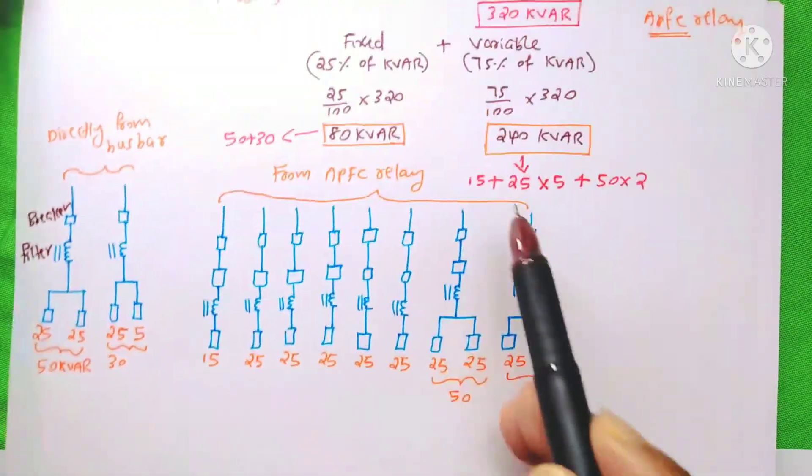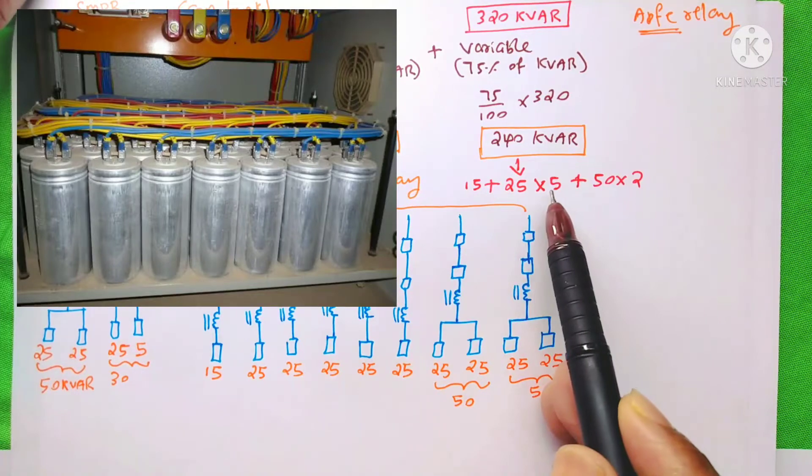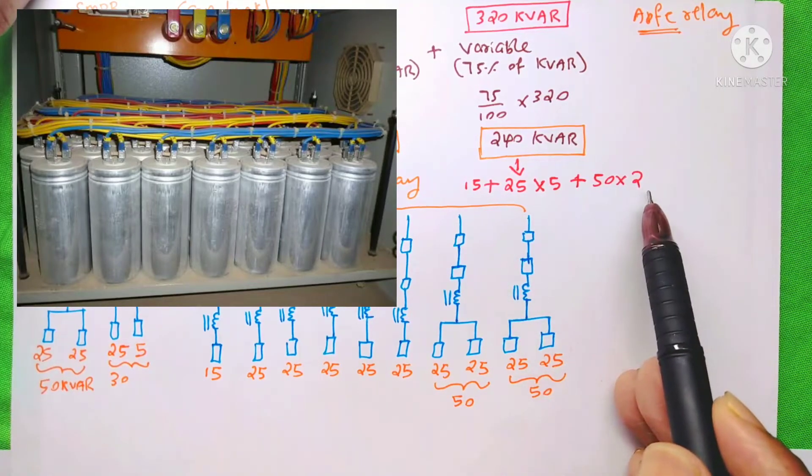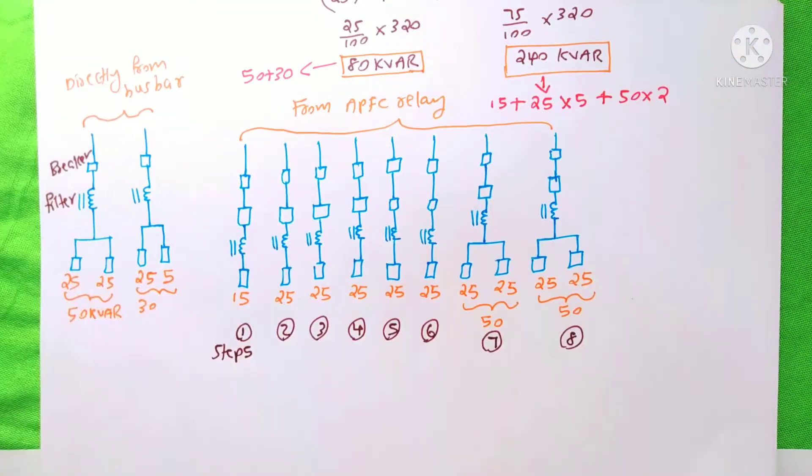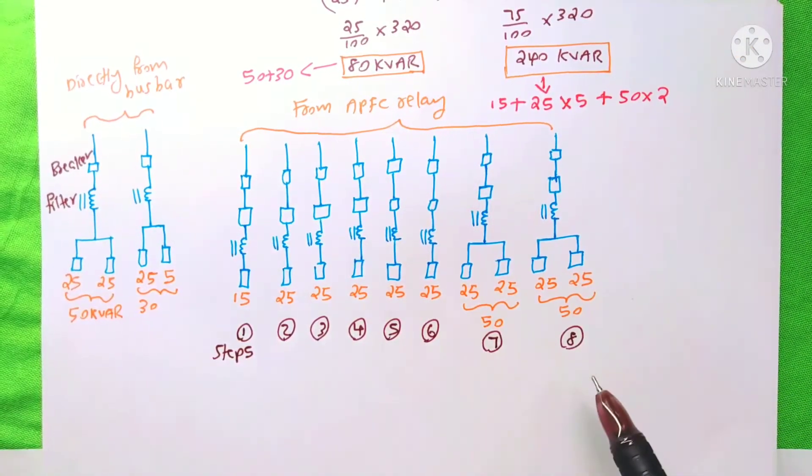So, I divide it into 15 plus 25 into 5 plus 50 into 2 kVAR. So the total will become 240 kVAR. And here, we have total of 8 steps.